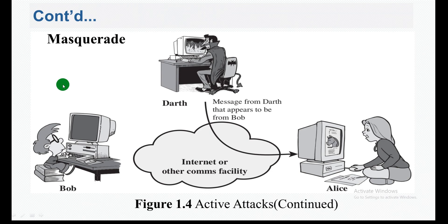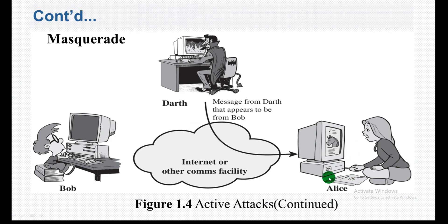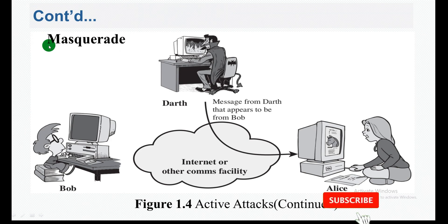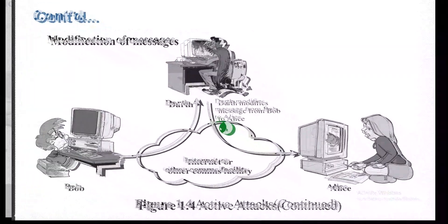In a masquerade attack, as you have seen here, there is no legitimate data transfer from Bob to Alice. Instead, the attacker creates messages that appear to be from Bob. The attacker fabricates and creates false data, acting as the sender and sending that data to the receiver Alice. We call this a masquerade attack.